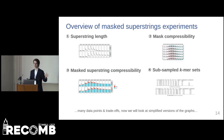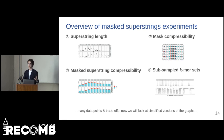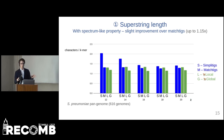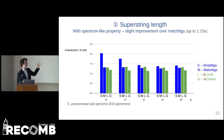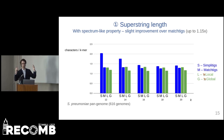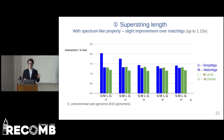Here is a brief overview of the experiments. First, we focused on the superstring length — whether we can get any improvements over simplitigs and matchtigs. We can see the results for several values of k, where the local and global algorithms are shown in green and simplitigs and matchtigs in blue. On the y-axis is the number of superstring characters per k-mer — that is, the total superstring length divided by the number of unique k-mers. The global algorithms perform better than matchtigs, but the improvements are only slight.